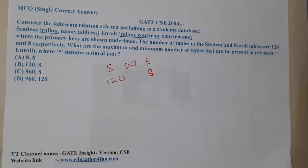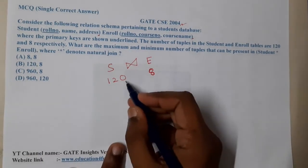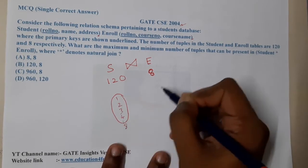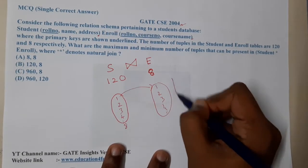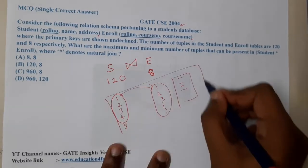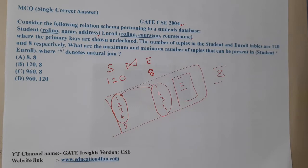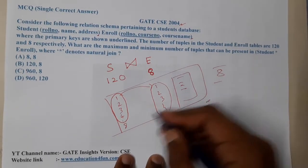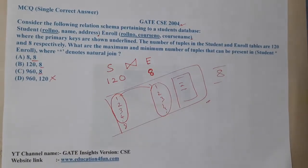For the minimum value: assume that among the 120 students, 8 students have role numbers 1 through 8, and those 8 students each took one course. In that case, the result will have 8 tuples. So the minimum is 8.